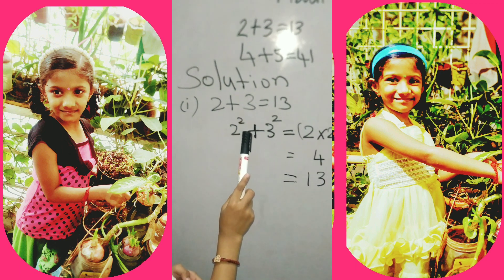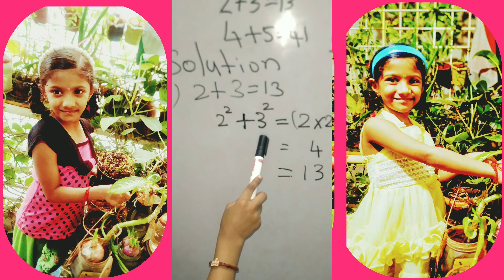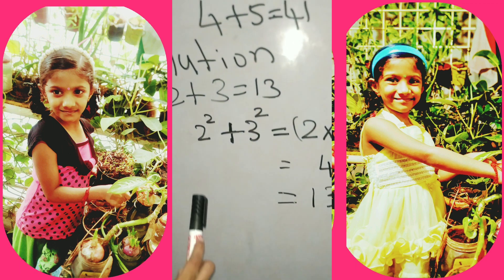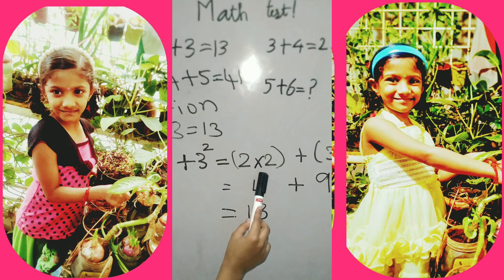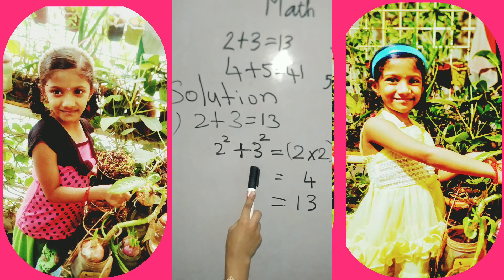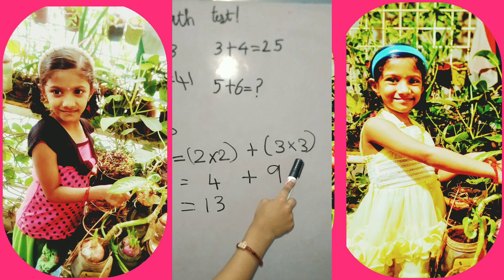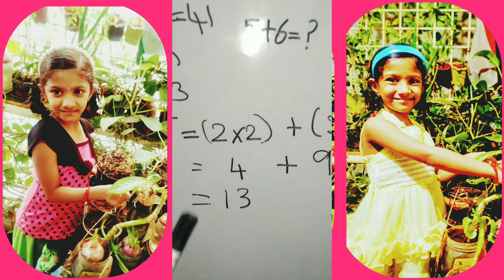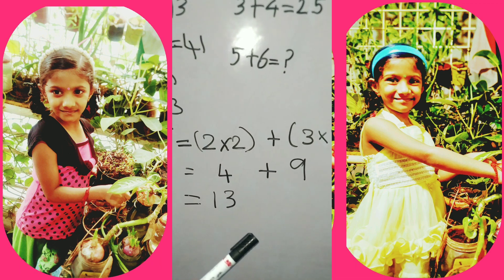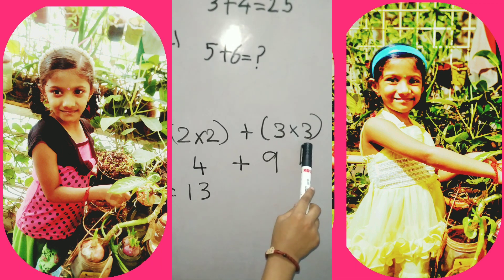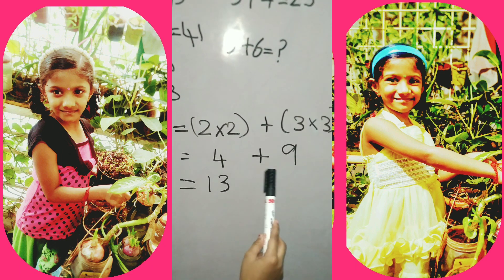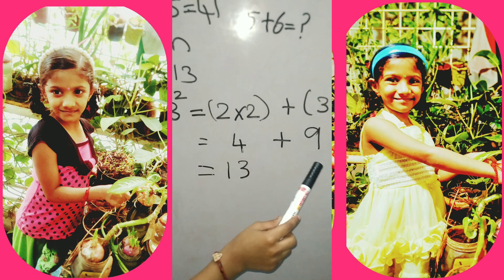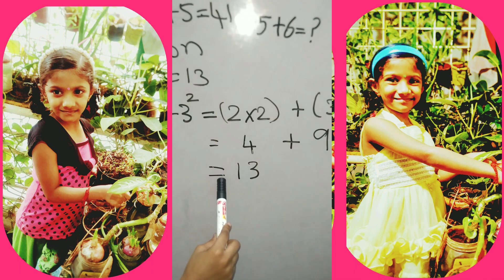2 squared plus 3 squared. 2 squared means 2 into 2. 3 squared means 3 into 3. 2 twos are 4. 3 threes are 9. So 4 plus 9 equal to 13.